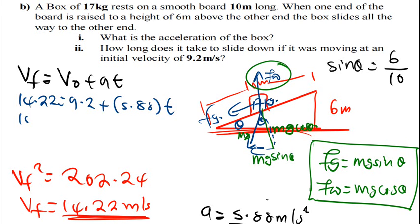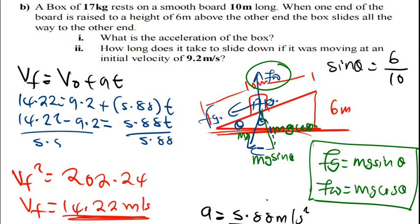Shift this to the other side. 14.22, minus, 9.2, should be equal to 5.88t. Divide both sides by 5.88, even here by 5.88. These two cancel out. So, our t is going to be, our time will be equal to, I have got 14.22, minus, 9.2.